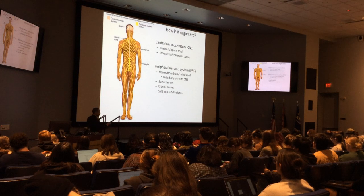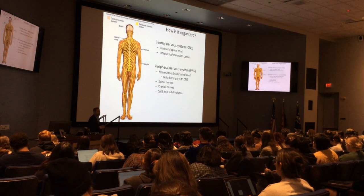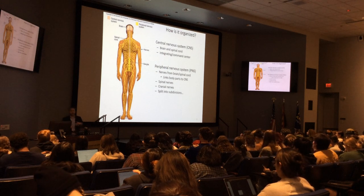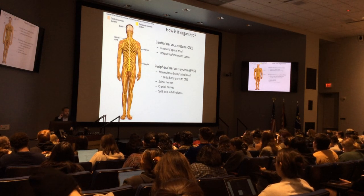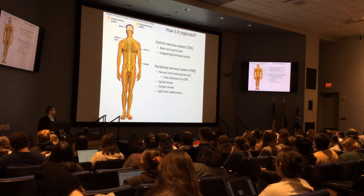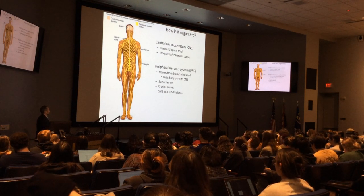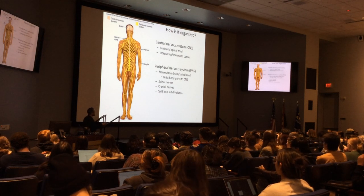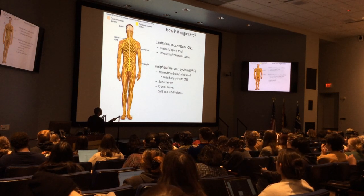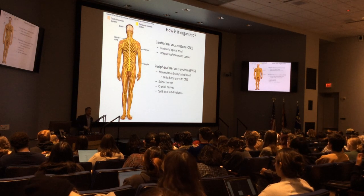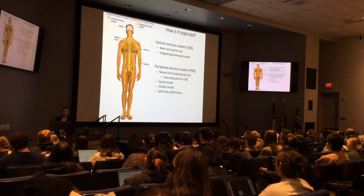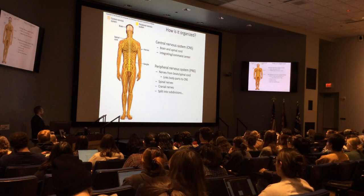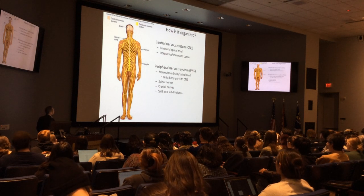There's a huge area of research looking at how we regenerate central nervous system nerves. That could be you. The central nervous system is the integrating command center — the central processing unit like your computer. The peripheral nervous system links the body to the central nervous system. You've got spinal nerves that come off the spinal column, and cranial nerves, which are part of the peripheral nervous system. There are 12 of them, which you'll study in lab.